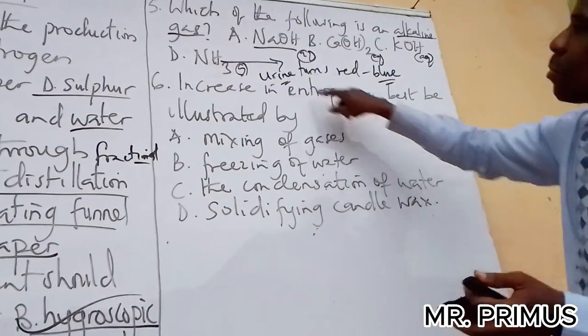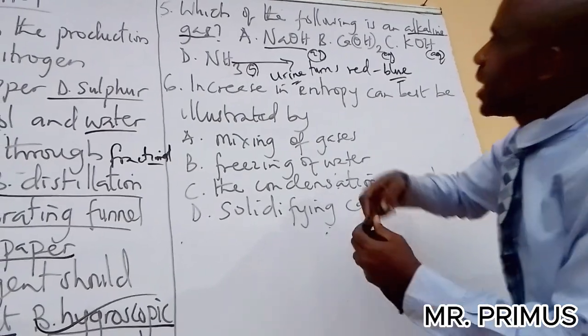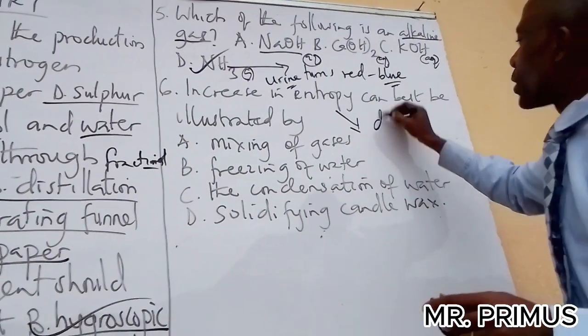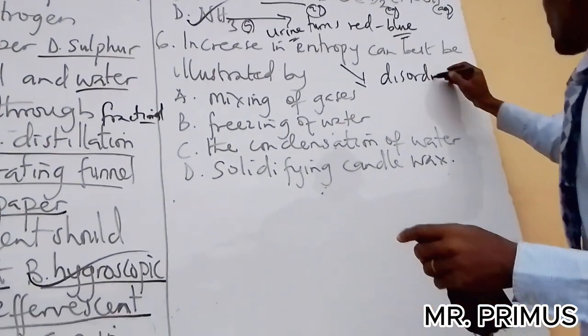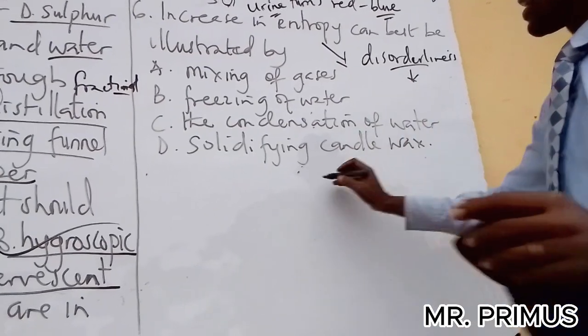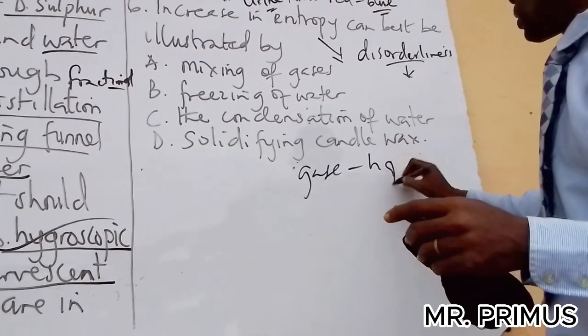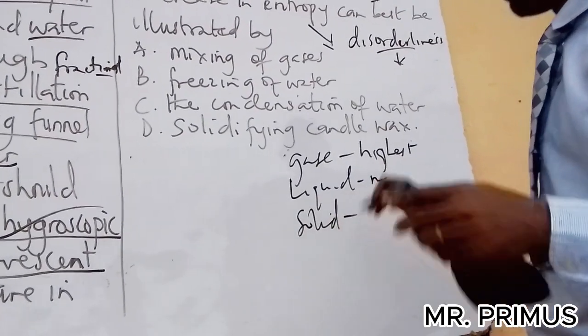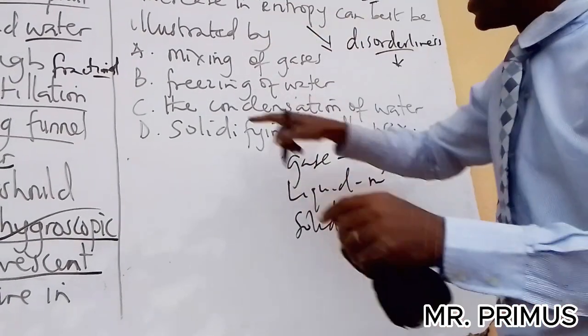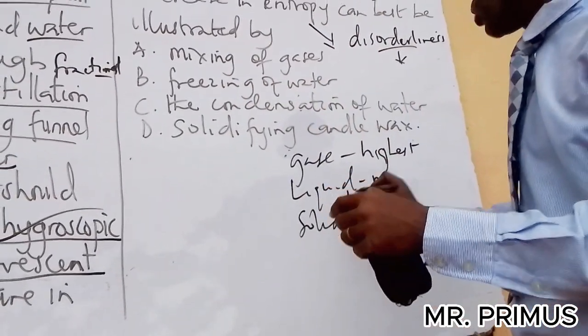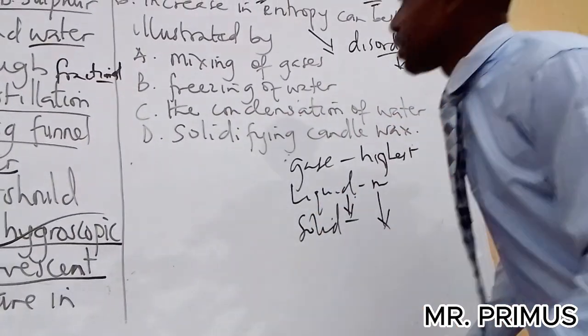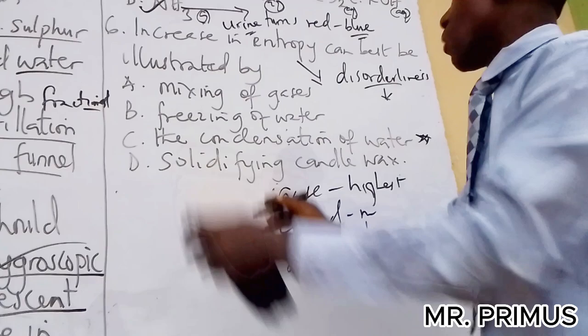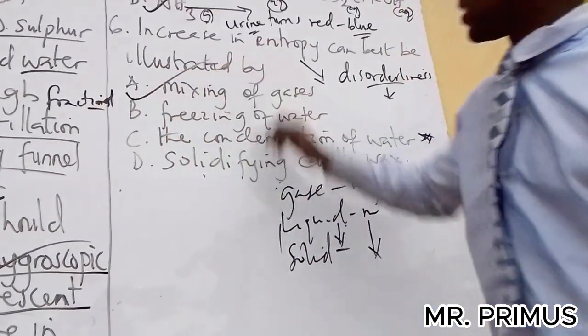Increase in entropy can best be illustrated by... Entropy is defined as degree of disorderliness and randomness of a substance. So gases have highest entropy, liquids have medium, solids have least or no entropy. Now the mixing of gases, there is high entropy. Freezing of water, which means it turns from liquid to solid, so it's low. Condensation of water - water evaporates and condenses forming clouds. Solidifying of candle wax means from liquid to solid. So the answer here is mixing of gases.